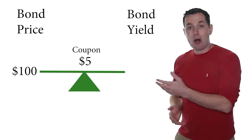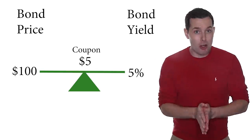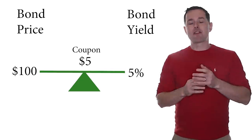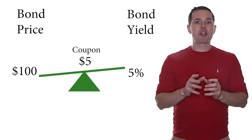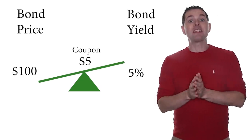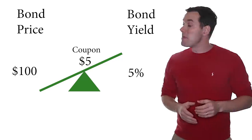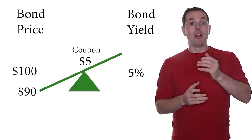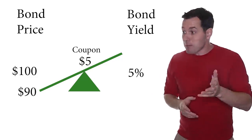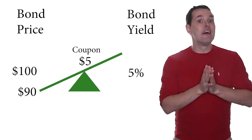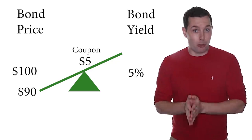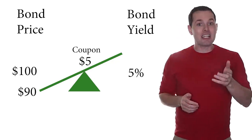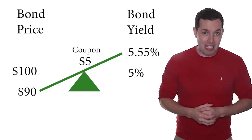So now we own this bond and supply and demand of the market takes over the bond pricing. For some reason, a whole bunch of people begin to sell the bond and the price falls — maybe all the way down to ninety dollars a share. At the same time, the coupon continues to pay five dollars per year. So now we have a dividend yield of slightly over five and a half percent.